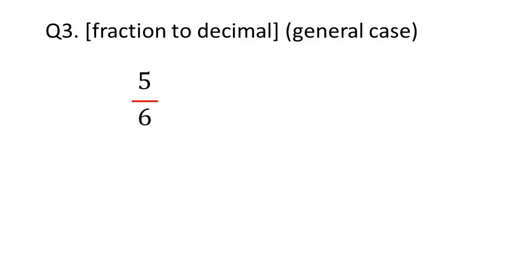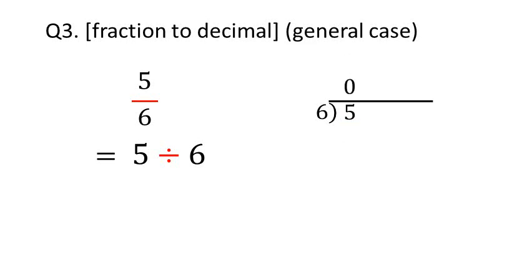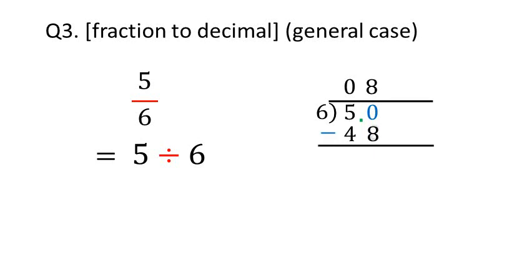Let's see the last question: 5 over 6. 5 over 6 can be changed to 5 divided by 6. Let's calculate 5 divided by 6 by long division. Consider 5. How many 6s can fit into 5? There are 0 sixes in 5, so we put a 0. Since 5 is a whole number, we can place a decimal point at the right end. There is no digit in tenths, so we place a 0 there. Now consider 50. How many 6s can fit into 50? There are 8 sixes in 50. 6 times 8 is 48. Subtract 48 from 50, which is 2.